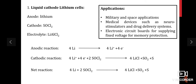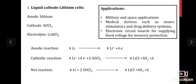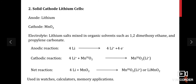Liquid cathode lithium cells are used in military and space applications, medical devices such as neurostimulators and drug delivery systems, and in some electronic circuit boards for memory protection. In liquid cathode lithium cells, the anode is lithium, the cathode is thionyl chloride (SOCl₂), and the electrolyte is LiAlCl₄. In the anodic reaction, lithium undergoes oxidation. In the cathodic reaction, SOCl₂ accepts electrons to produce lithium chloride, sulfur dioxide, and sulfur. The net product is lithium chloride.